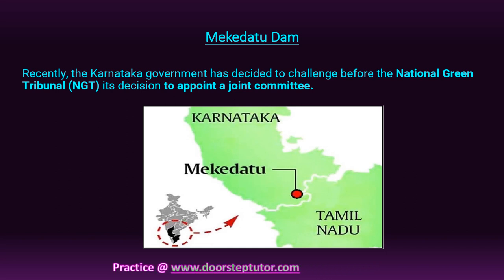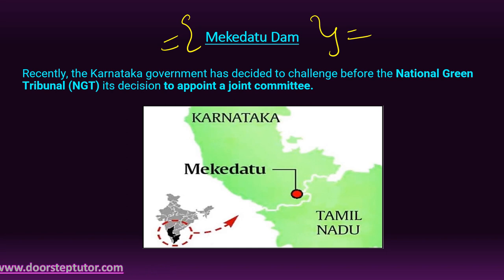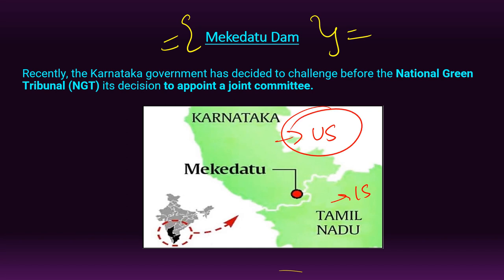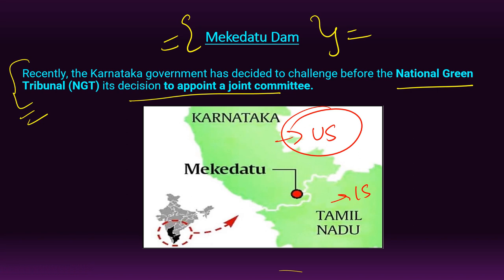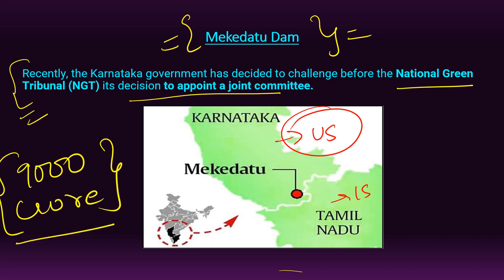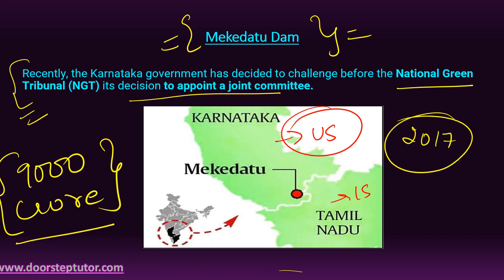Another important topic is the Mekedatu Dam project, which has been in news for over a year. Tamil Nadu is the lower riparian state and Karnataka is the upper riparian state. The Supreme Court recently challenged Karnataka's government decision to appoint a joint committee before the NGT. The Mekedatu project is a ₹9,000 crore project with the basic aim of storing and supplying water for drinking purposes for Bengaluru city. It was approved in 2017 by the Karnataka state government.